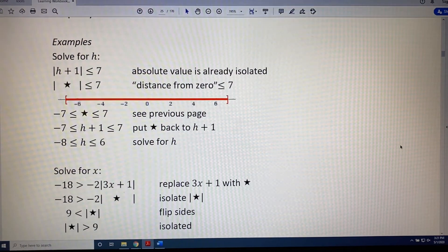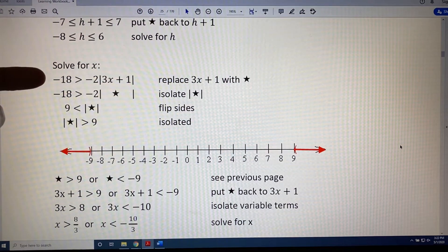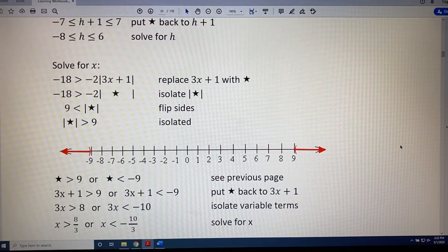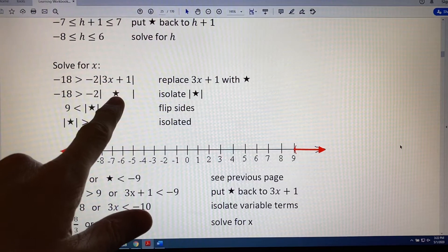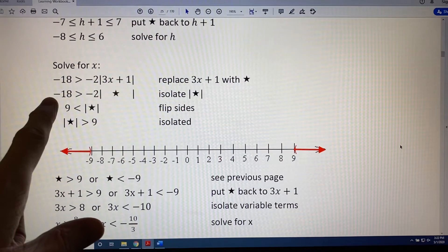Let's look at our next example. Negative 18 is greater than negative 2 times the absolute value of the sum 3x plus 1. First, replace 3x plus 1 with star. Next, isolate the absolute value of star by dividing both sides by negative 2.